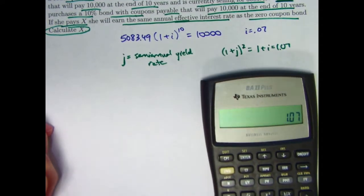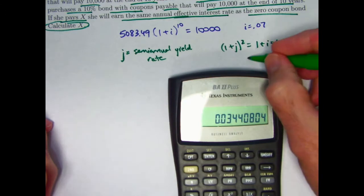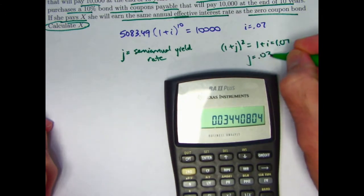So take 1.07 and raise it to the one-half power. Take the square root and subtract one. J is about 0.0344.